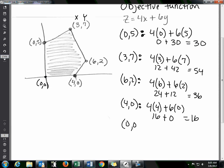And then at 0,0, you have 4 times 0 plus 6 times 0, which is 0. So now I've done part A—I found the value at each of the points.